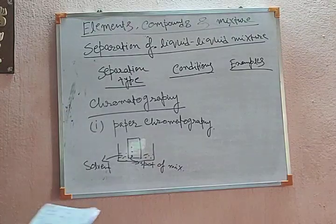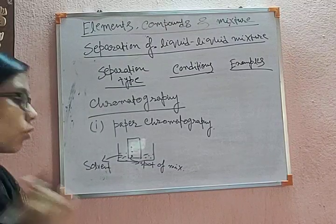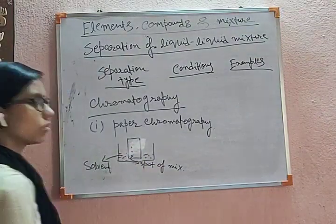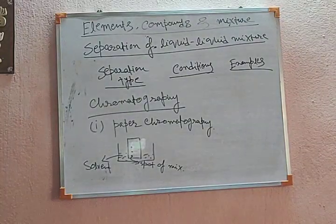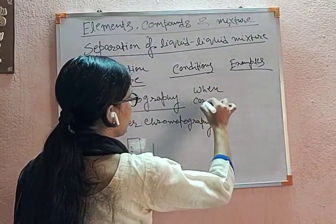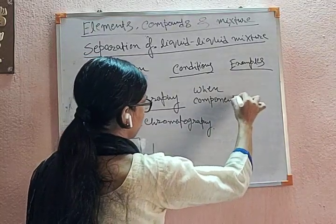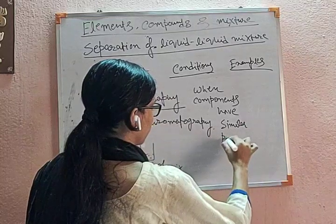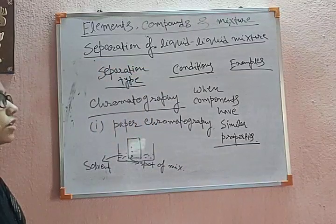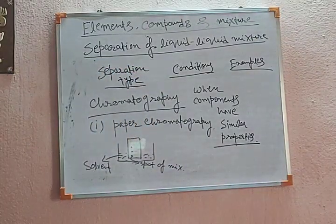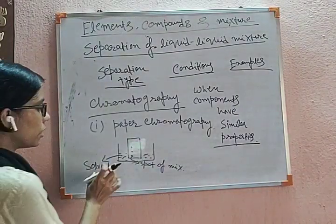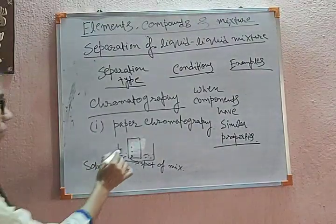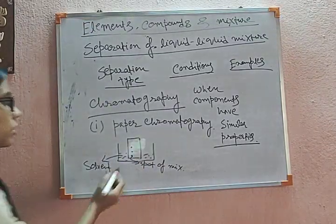The more soluble substance rises faster. Between the two liquids, the liquid that is more soluble in the solvent gives the first (upper) spot, and the liquid that is less soluble gives the second (lower) spot. The upper spot is for the more soluble liquid and the lower spot is for the less soluble liquid. That is the separation technique.